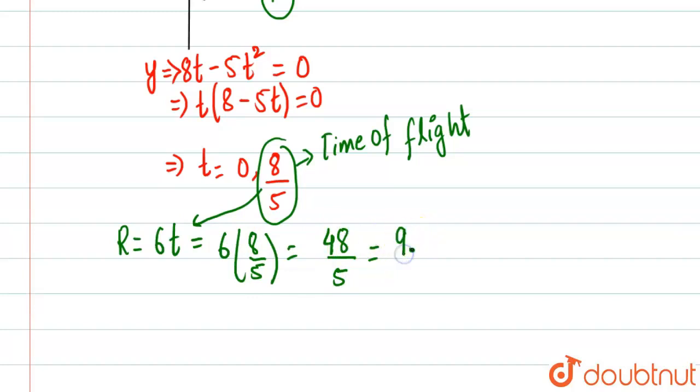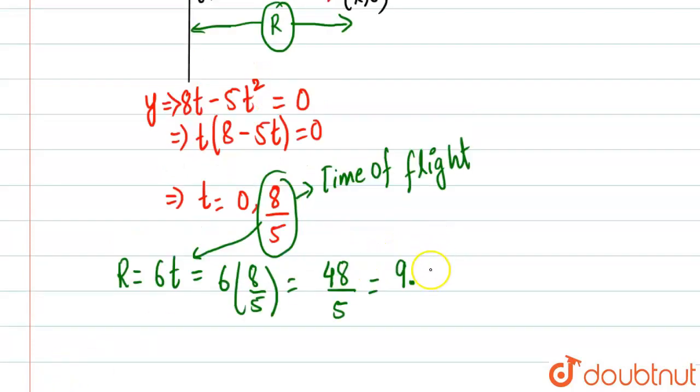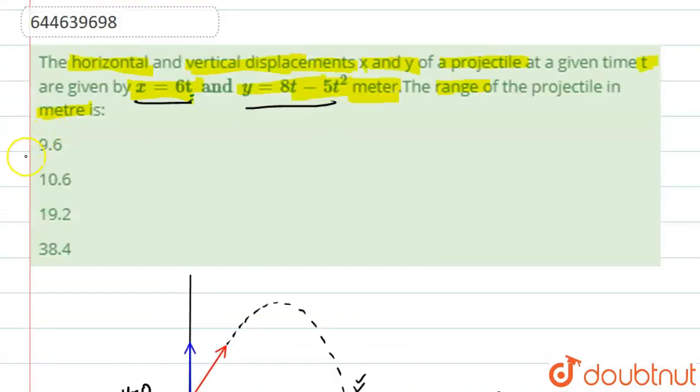So after doing the solution, we'll get 9 point—5 nines of 45. So we'll get a 9 over here and we'll get a 6. So 9.6 meters is basically the range of the projectile. So our answer is option number A.